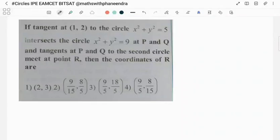Hi, hello students, welcome to our channel Maths with Panindra. In this video I am going to discuss a question in circles. If tangent at (1,2) to the circle x² + y² = 5 intersects the circle x² + y² = 9 at P and Q respectively, and the tangents at P and Q to the second circle meet at the point R, then the coordinates of R are? First we need to draw the figure according to the question.